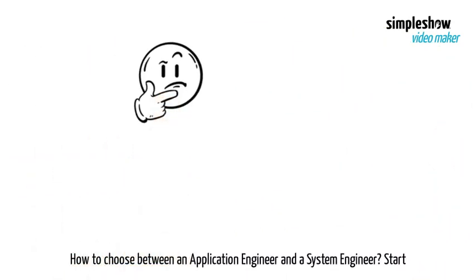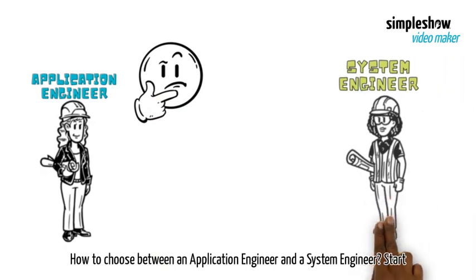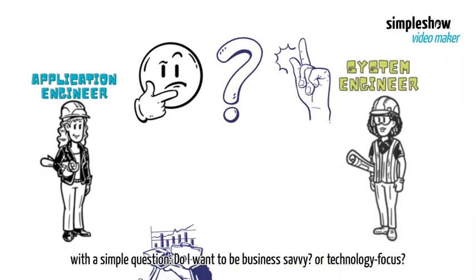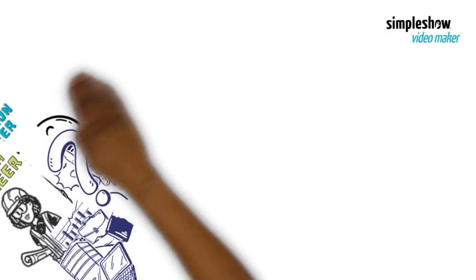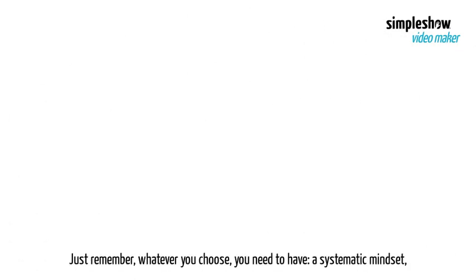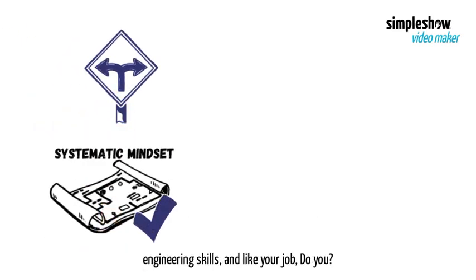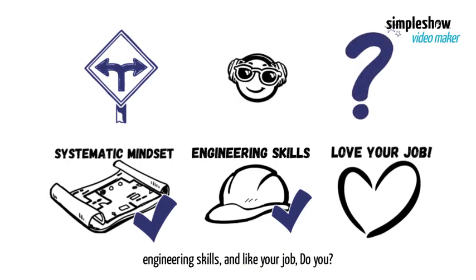How to choose between an application engineer and a system engineer? Start with a simple question: Do I want to be business-savvy or technology-focused? Just remember, whatever you choose, you need to have a systematic mindset, engineering skills, and like your job.